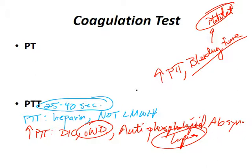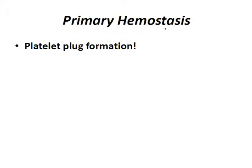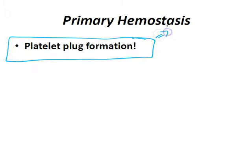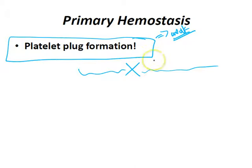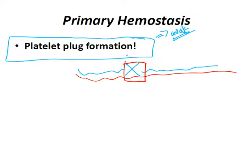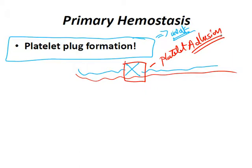Now that we understand PT and PTT, let's talk about primary hemostasis. The whole point is forming the platelet plug — it's a weak formation. This happens whenever you have endothelial injury. If we have an endothelium and we break it, the underlying collagen is exposed, and platelets start adhering — that's called platelet adhesion, not aggregation.